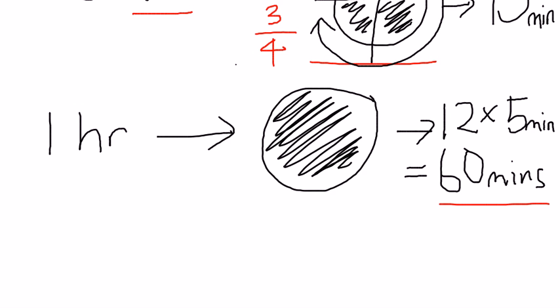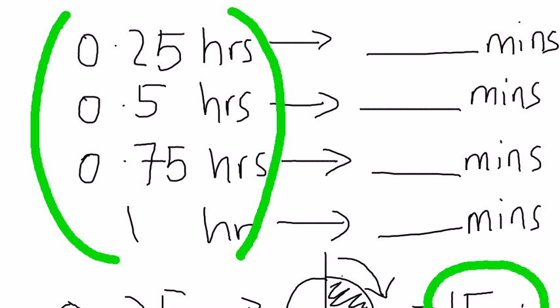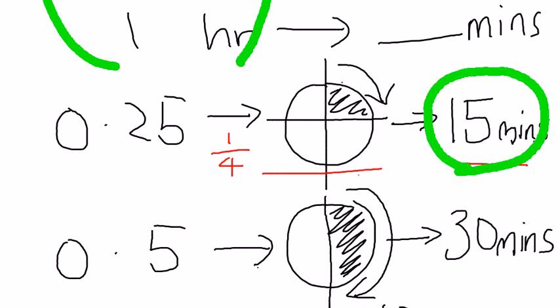So let's do a recap. First, these are the four that we hope that you will remember: 0.25, 0.5, 0.75, and one hour. So, start with the first one, 0.25. As you can see, 0.25 is actually one quarter. Now, one quarter in the circle, as you can see very clearly, is actually equal to 15 minutes.